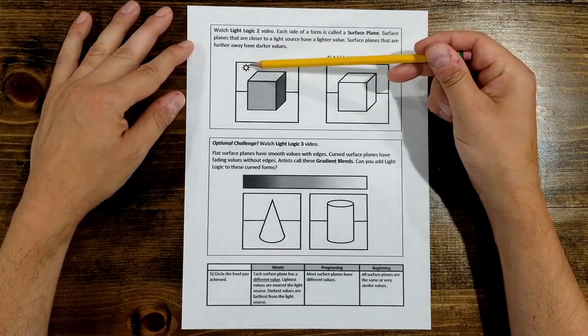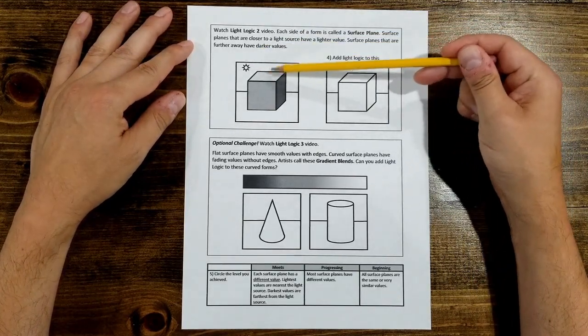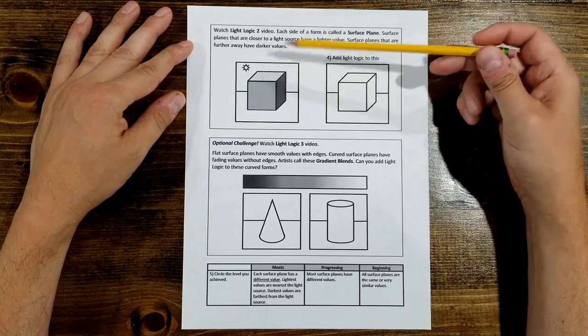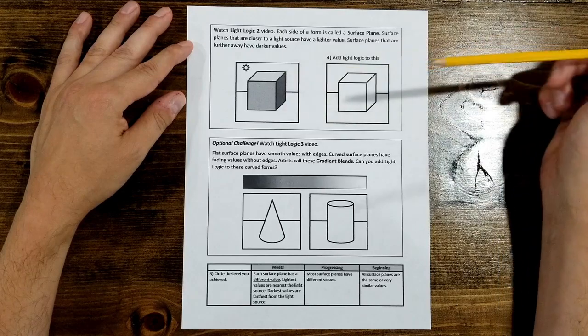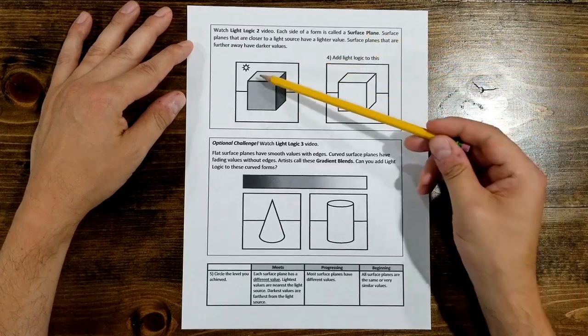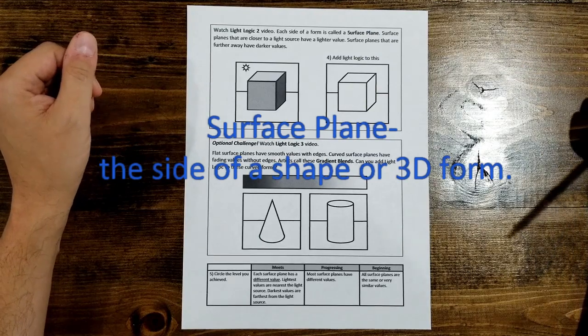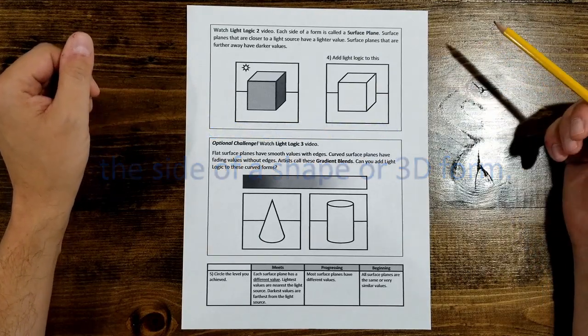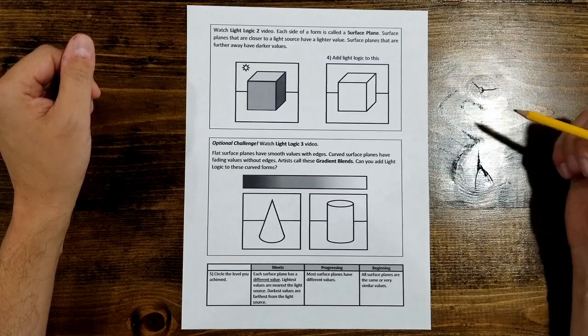Take the sun for example. It's high and to the left, and so the higher edges and sides are going to be lighter, and the right side of the box is going to be darker. Each of these sides is something an artist calls a surface plane. We're going to be thinking about those surface planes as we add our line quality and our texture to the boxes.